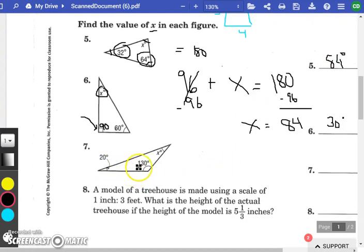Problem number seven, 20 plus 130 is 150. This is once again a 30 degree angle. If you were to set up this equation, it would look like this: x plus 150 equals 180 degrees. And then what you would do is you would take away 150 from both sides. Then you're left with x on one side and 30 on the other, which is what your answer is.